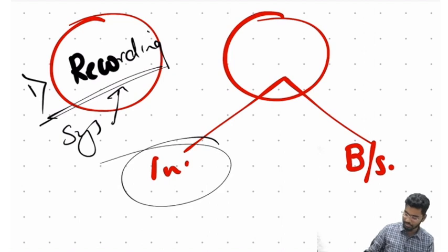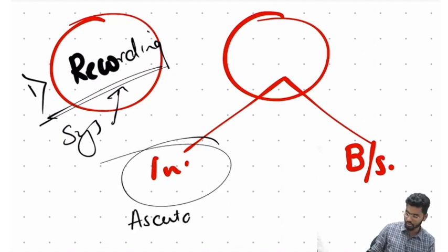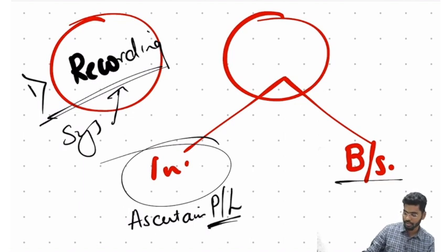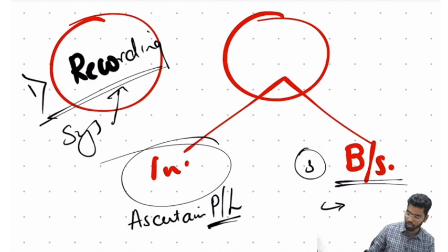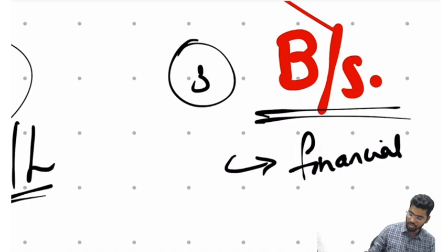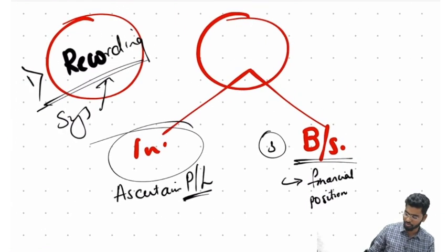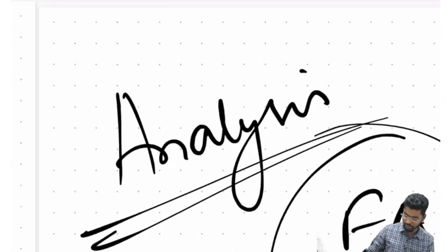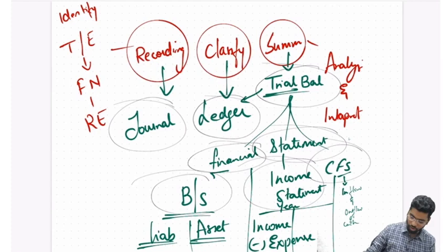The second objective: in an income statement, you are trying to ascertain profit or loss. The third objective: a balance sheet is used to know the financial position of a firm. So three objectives from the process are: recording, knowing the financial position, and knowing the profit or loss.